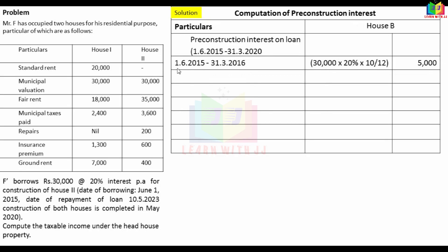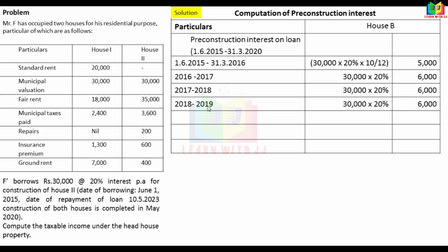For FY 2015-16: 30,000 × 20% × 10/12 months (June 2015 to March 2016). From FY 2016-17 onwards, each year is a full year: 30,000 × 20% = Rs. 6,000 per year. This applies for 2016-17, 2017-18, 2018-19, and 2019-20 (ending 31st March 2020). The total pre-construction interest comes to Rs. 29,000.